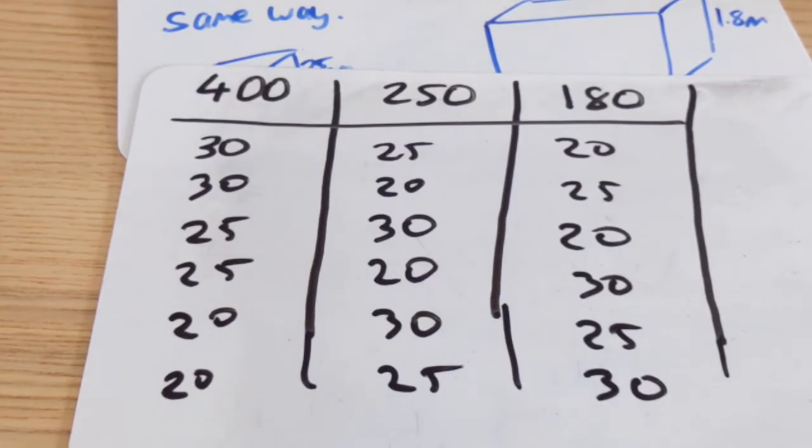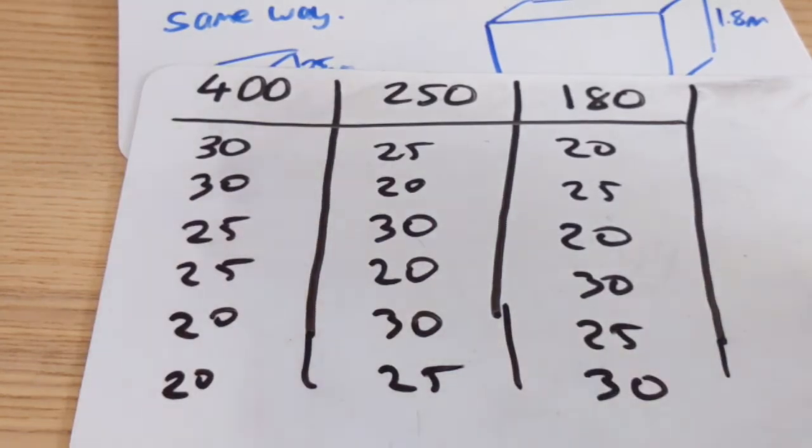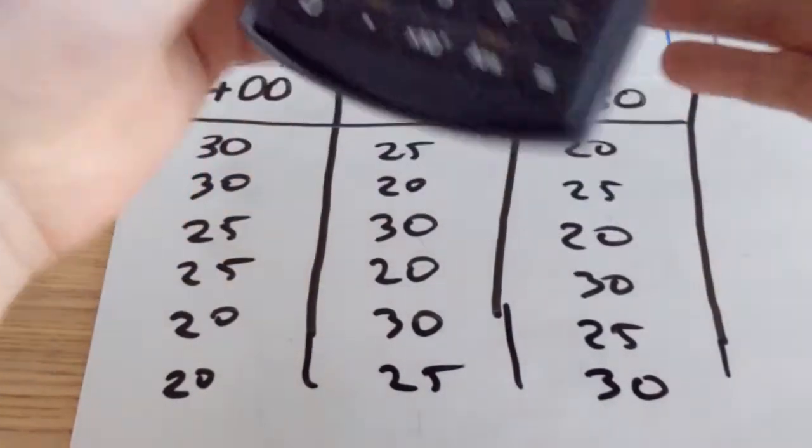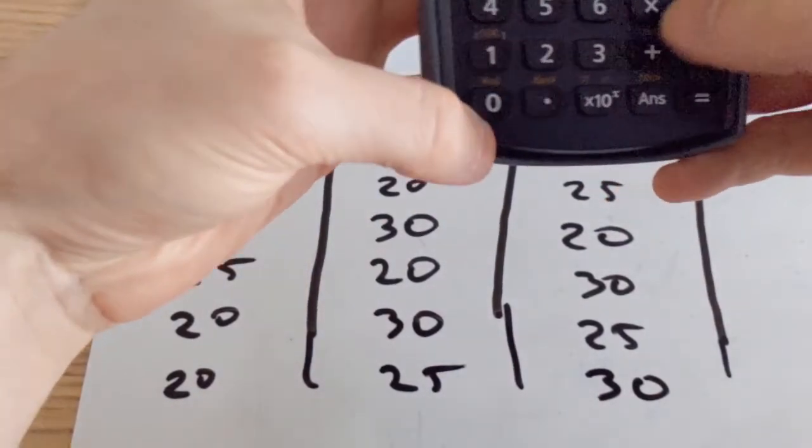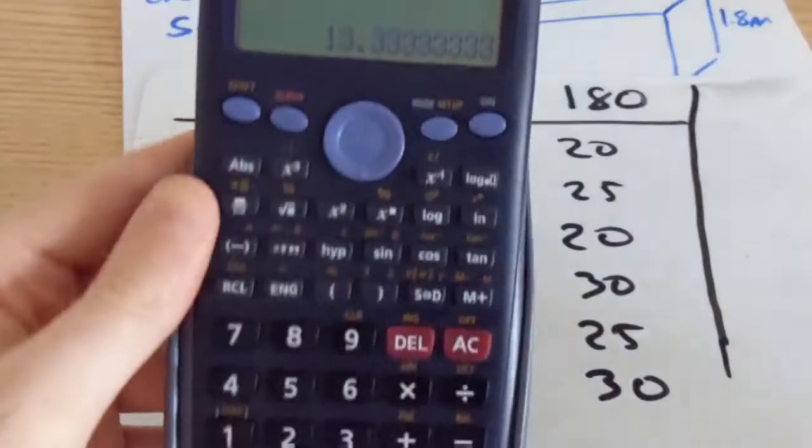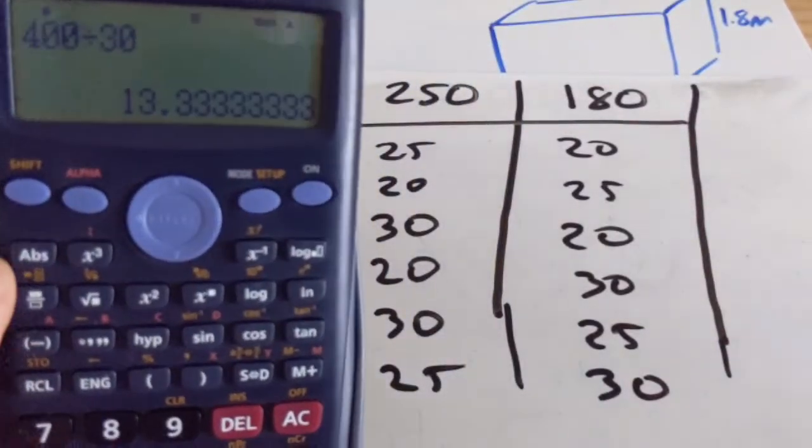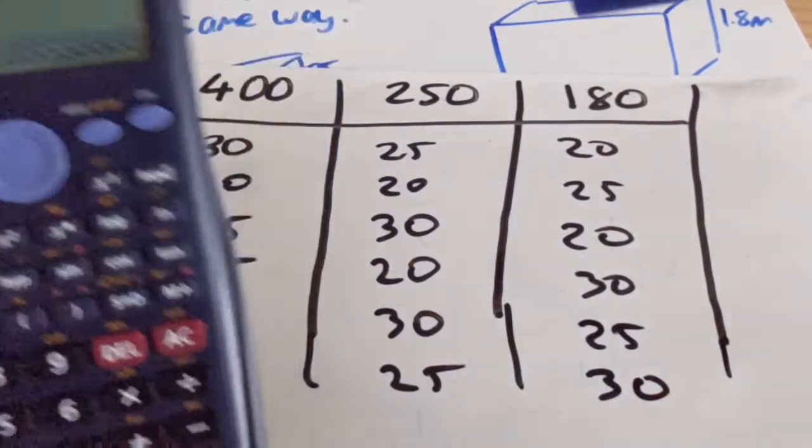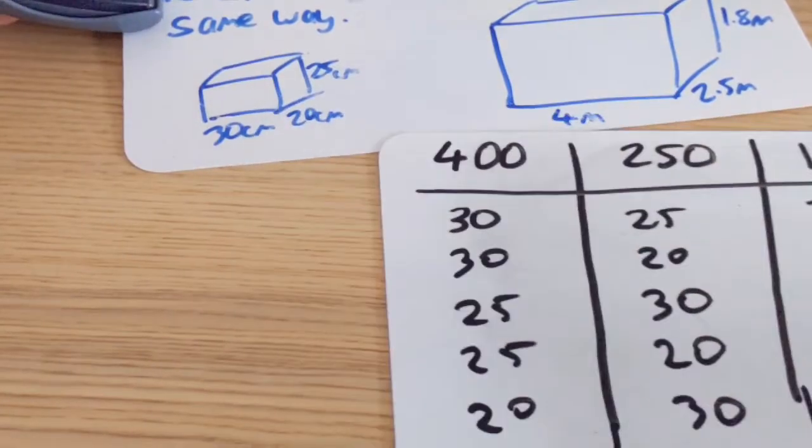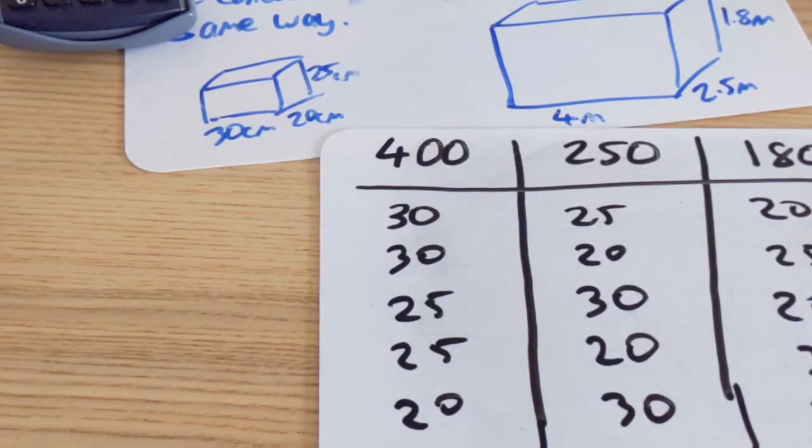What I've got to do next is divide the length of the container by the length of the boxes. So I'll do 400 divided by 30 and what that does is that gives me 13 and a third of a box. Obviously I can't stack a third of the box because it would be sticking out of the container.